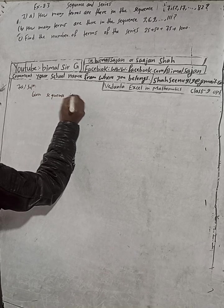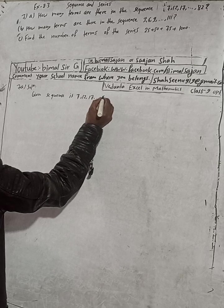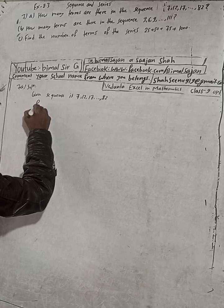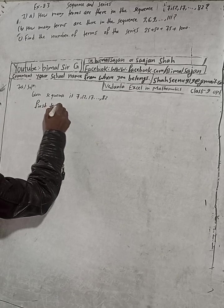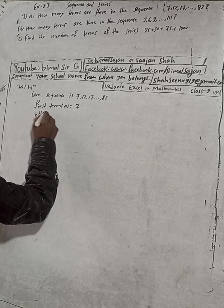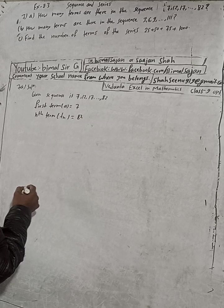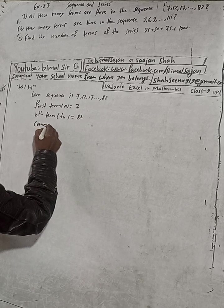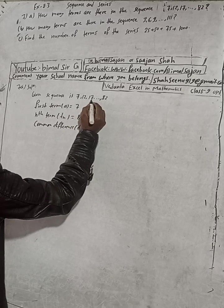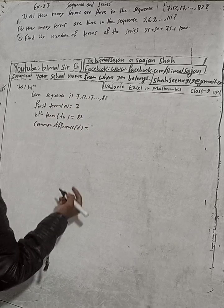The given sequence is 7, 12, 17, dot dot dot 82. Now here you can see first term, indicated by small a, this is 7, and this is the last term, that is nth term. Tn is equal to 82. And common difference, d, see 17 minus 12 is 5, 12 minus 7 is 5, so the common difference is 5.